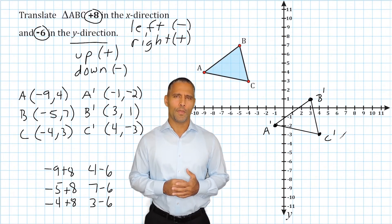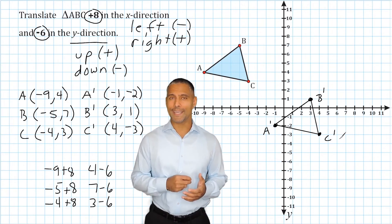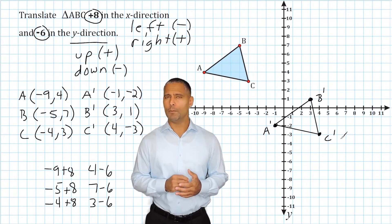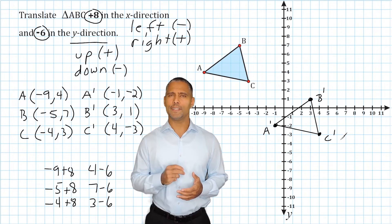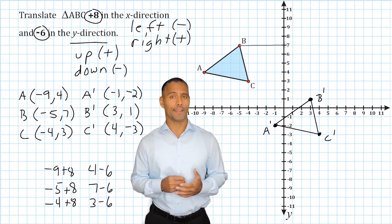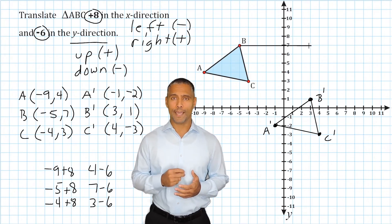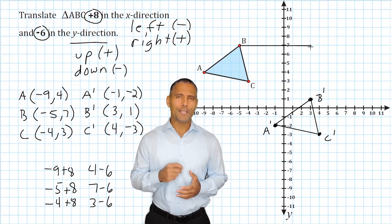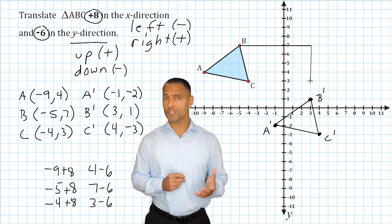We can also verify that we did our translation correctly by taking each point individually and moving over to the right 8 and then down 6 to see if we land on the correct location. So if we start here at point B and go over 8 in the x-direction and we go negative 6 in the y-direction, we can see that we did end up where we were supposed to.